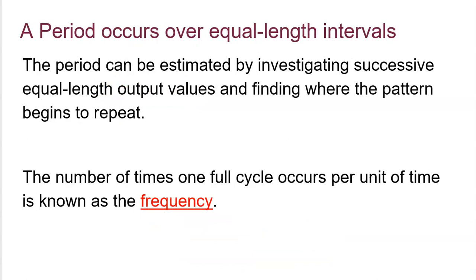The period can be estimated by investigating successive equal-length output values and finding where the pattern begins to repeat. You can look anywhere to find the length of the period — you just have to find where the pattern begins, where it ends, and that length from beginning to end is your period length.